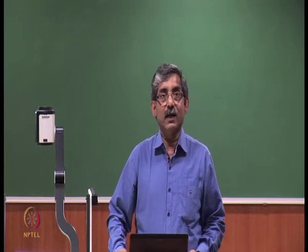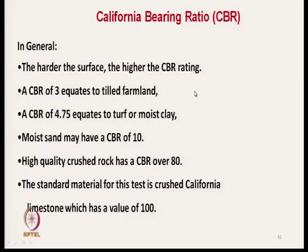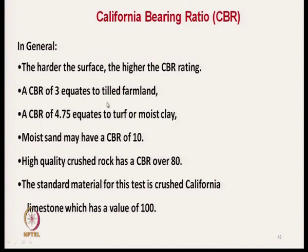CBR reference values: tilled farmland is very low; moist clay is around 4.5; moist sand is around 10; high-quality crushed rock is about 80; and standard crushed California limestone is 100, since it is the reference standard. Depending on the CBR value, we select the appropriate geotextile.